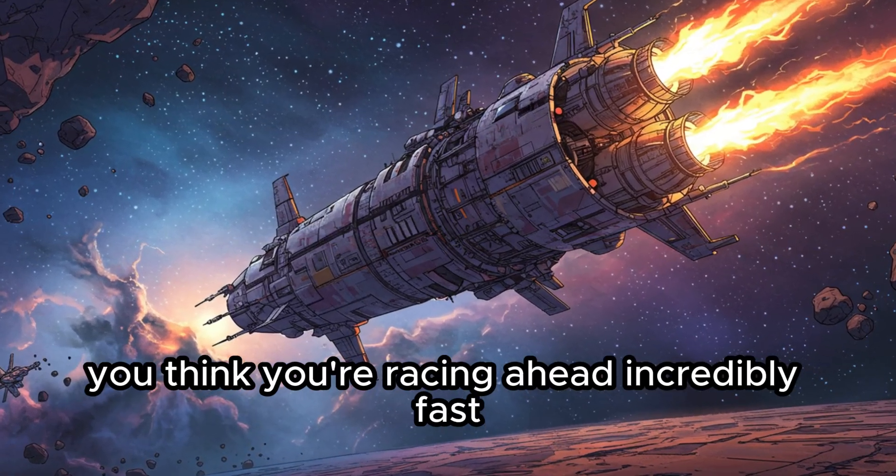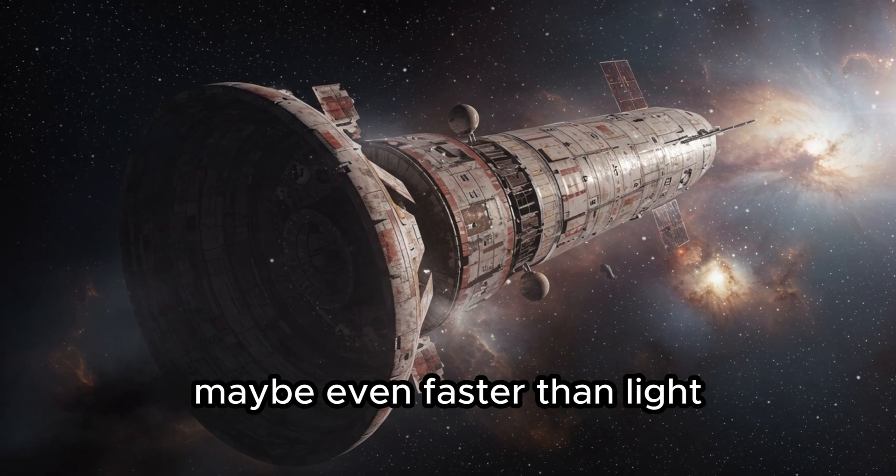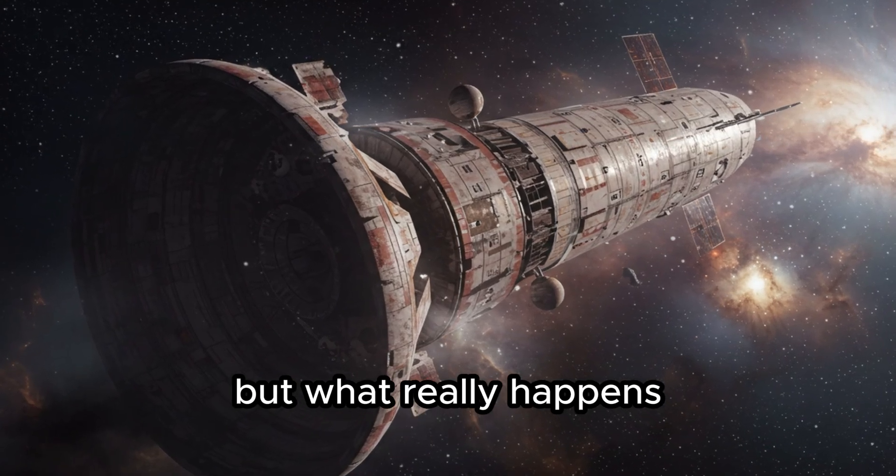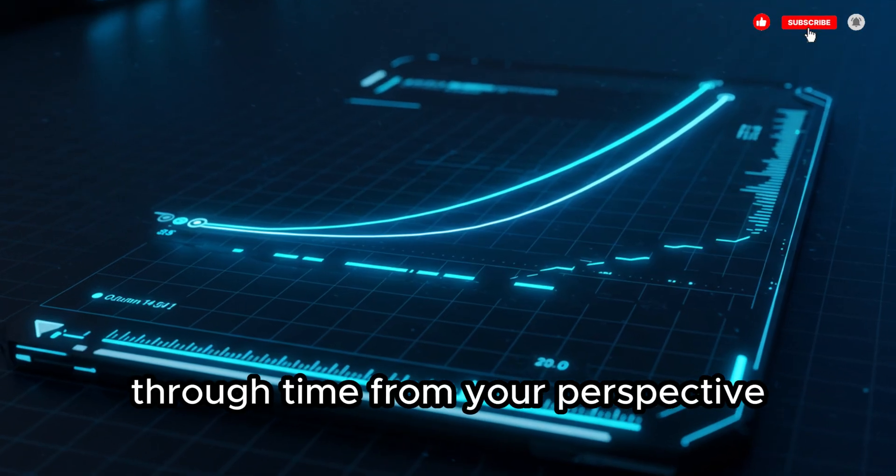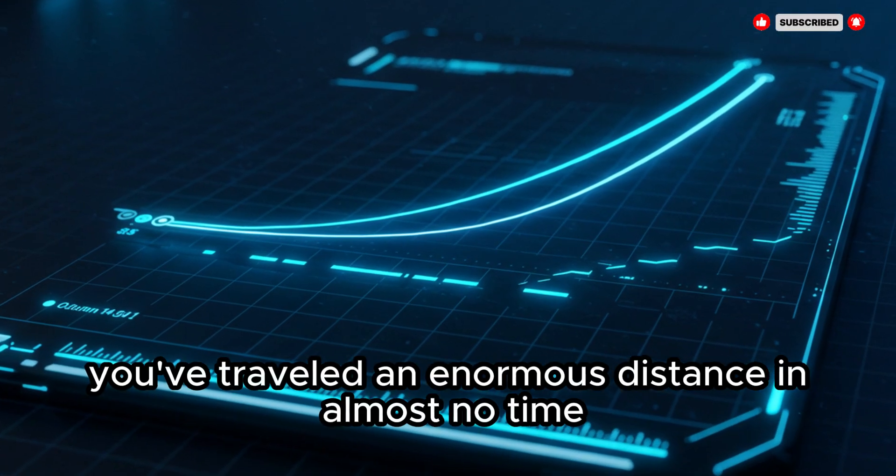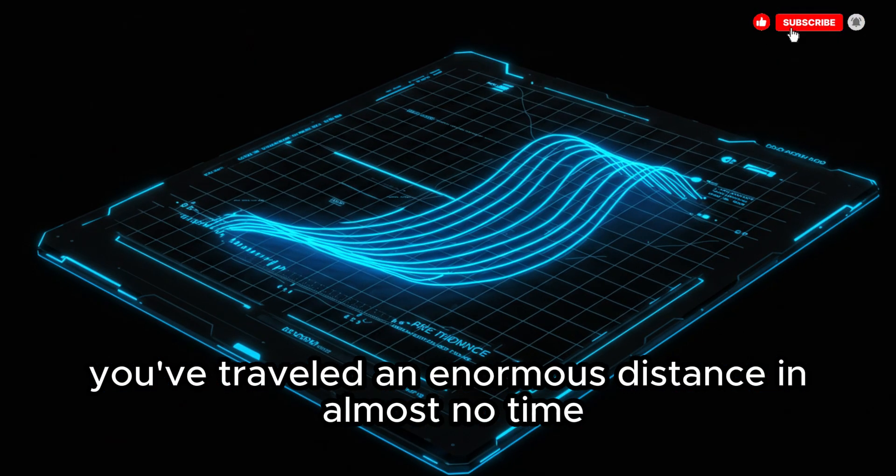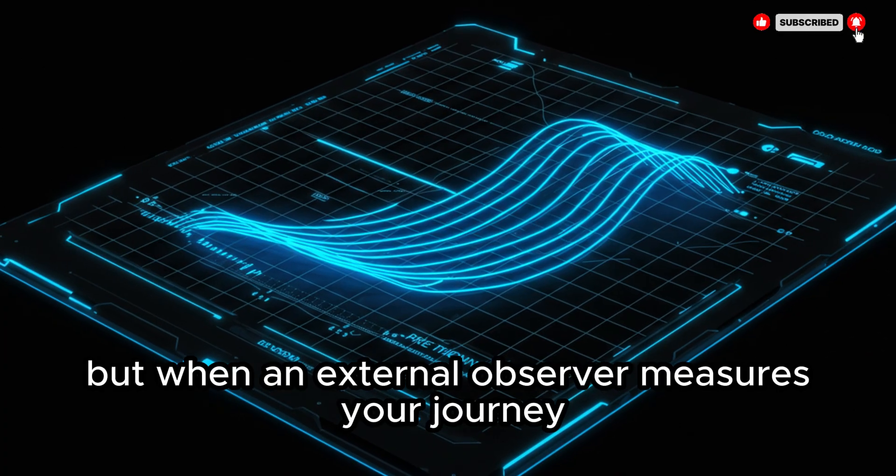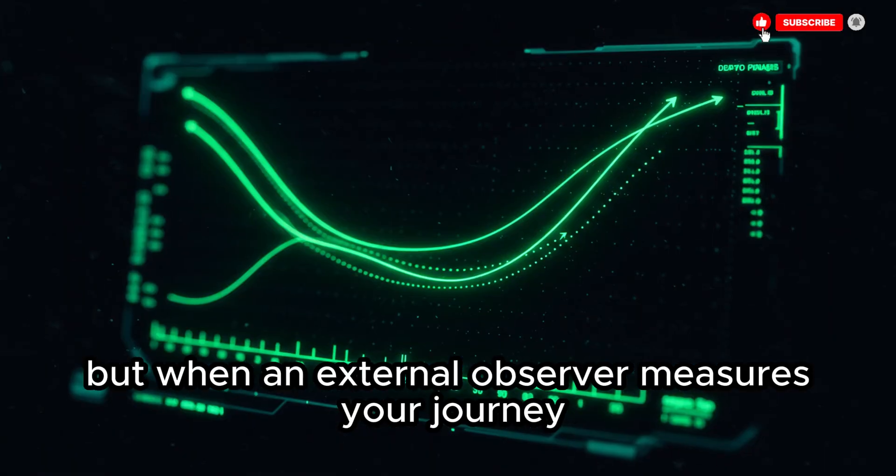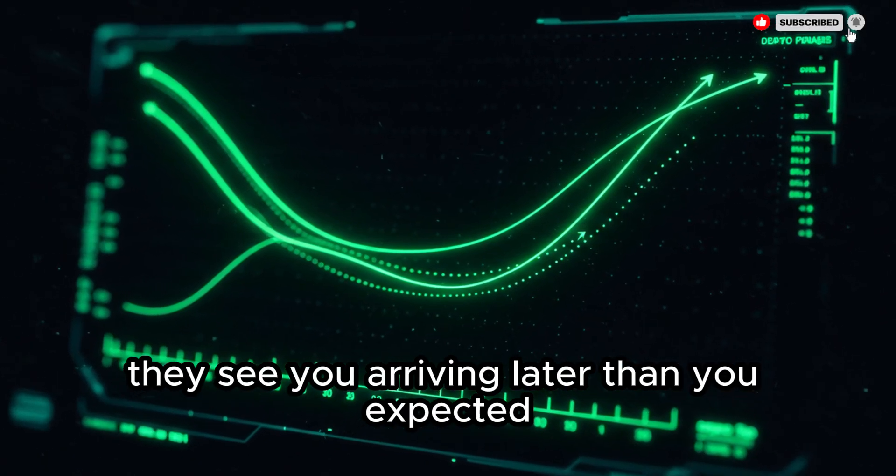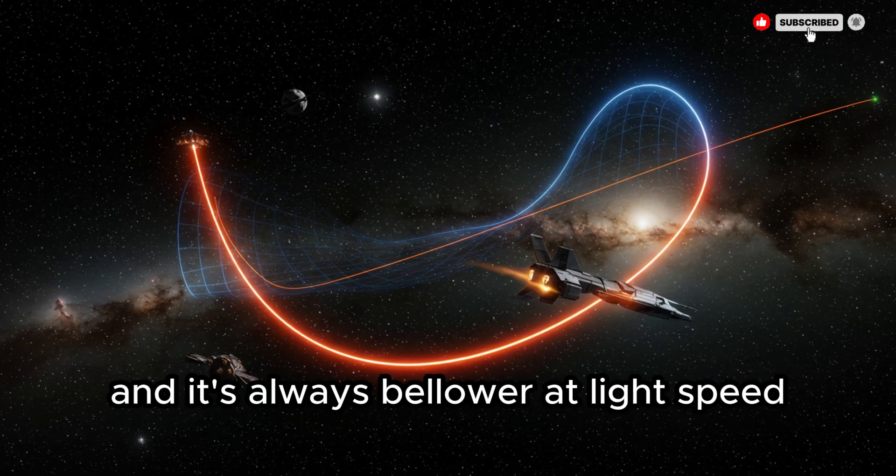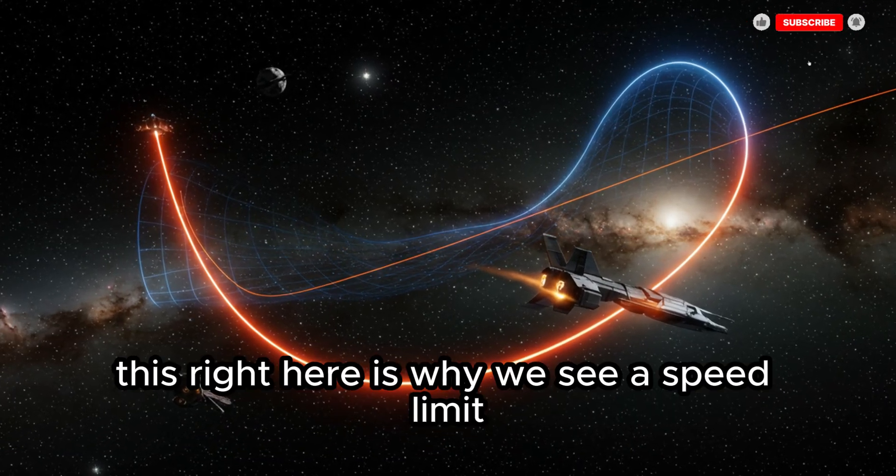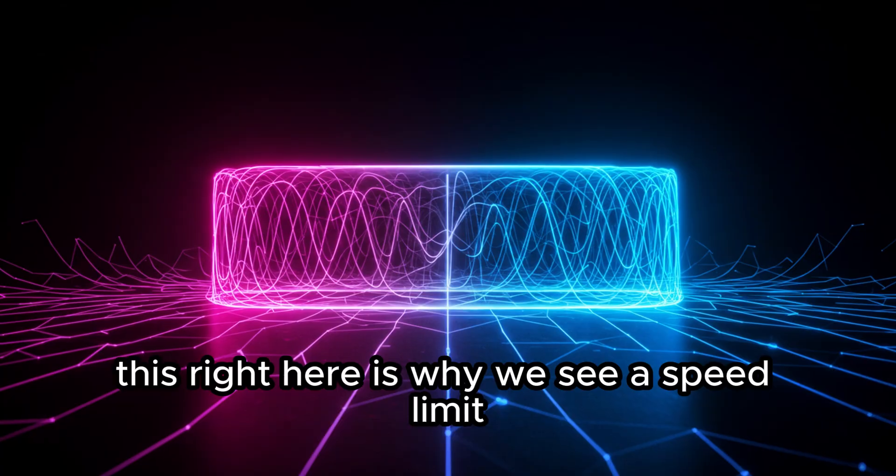You think you're racing ahead incredibly fast. Maybe even faster than light. But what really happens is that you've bent your trajectory into a shortcut through time. From your perspective, you've traveled an enormous distance in almost no time. But when an external observer measures your journey, they see you arriving later than you expected. They calculate your average speed and it's always below light speed.